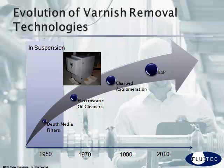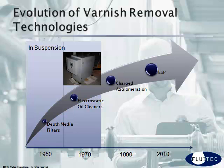Electrostatic oil cleaners were developed in the 1970s. They work by applying a charge to the submicron contaminants as they flow through a collector. They are designed to work with non-conductive fluid, so a little bit of water contamination will impact its performance. Depending upon the manufacturer, they can be effective. However, they are only designed to remove contaminants in suspension.